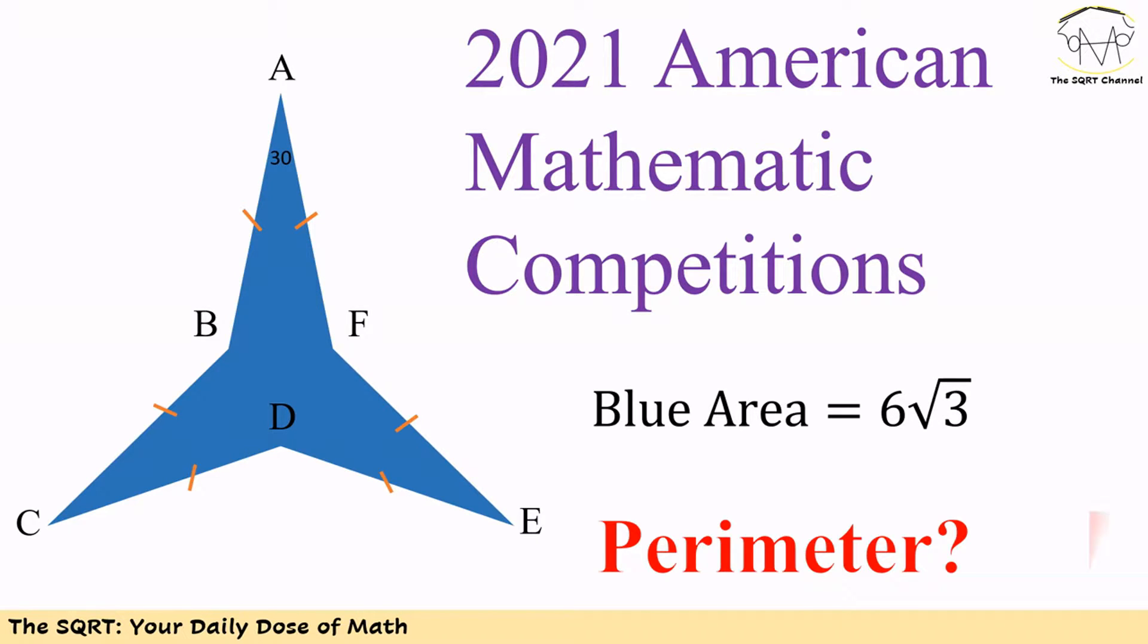Hello everyone, in this video we are going to talk about a problem from 2021 American Mathematic Competitions. In this problem we have a star-shaped polygon. Internal angle BAF is equal to 30 degrees, the area of this polygon is 6√3, and we want to find the perimeter of this polygon.